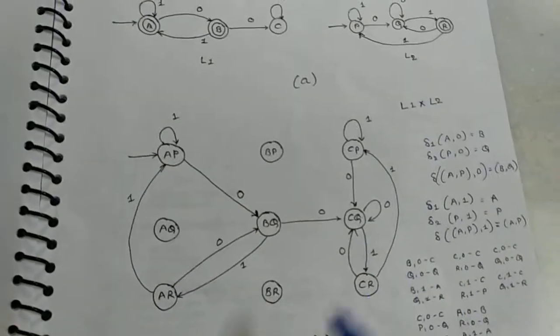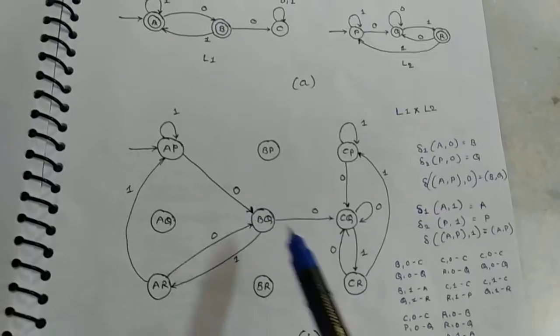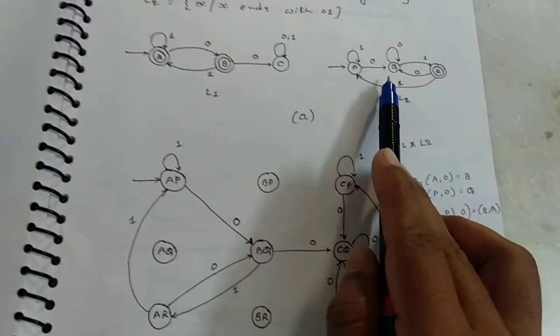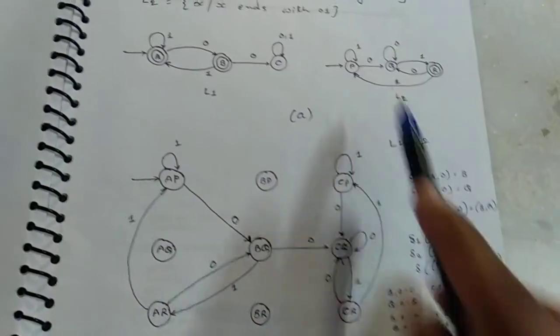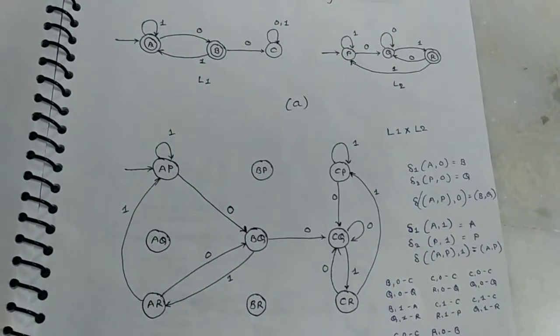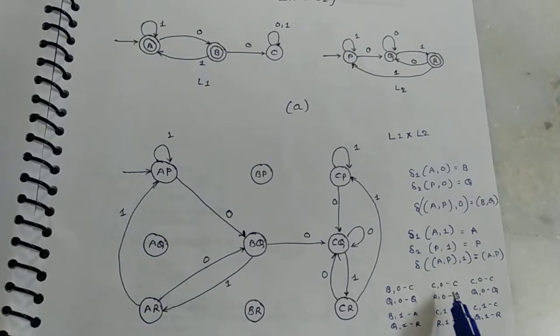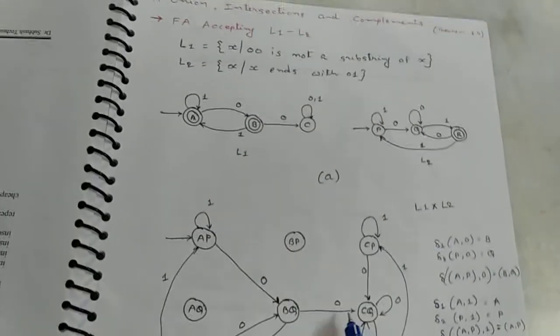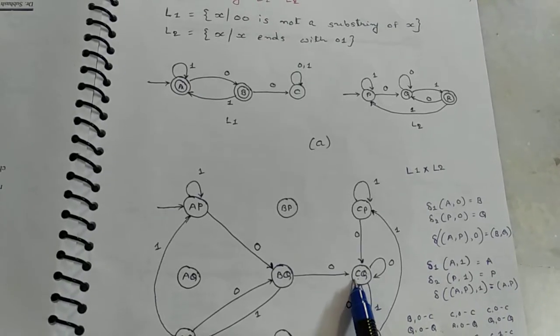Then after BQ. First B to 0 reach at C and Q to 0 reach at Q. So BQ to 0 reach at CQ.